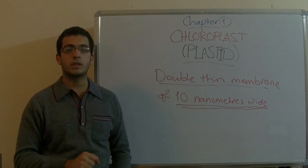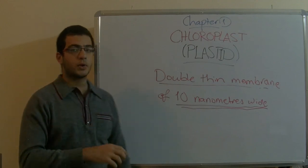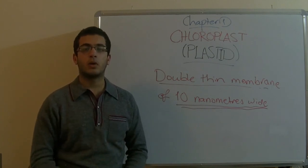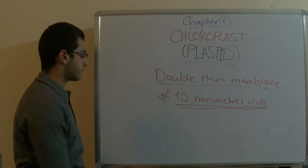And inside the chloroplast, there is a fluid, which is a colorless proteinic substance. It's made of protein, which is called the stroma or the matrix.